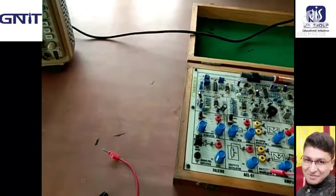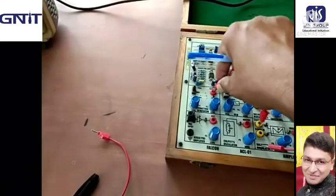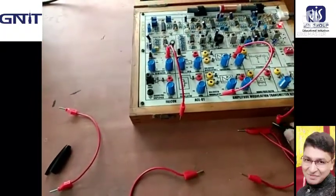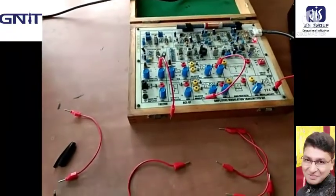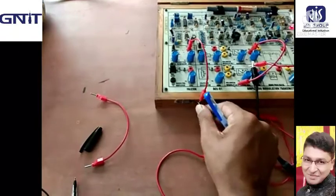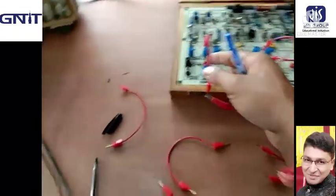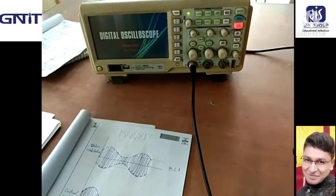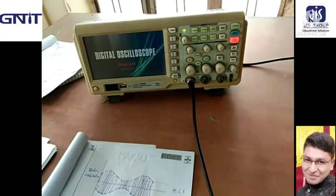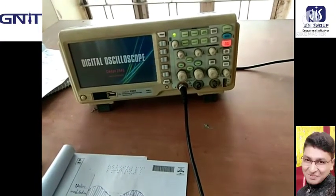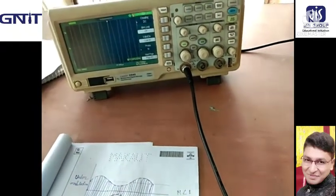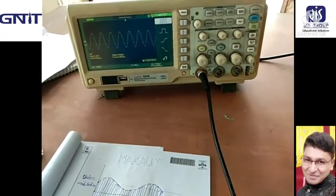Now, measure the message signal. The black probe is connected to ground and the red probe is connected to the message signal. Now see the signal. This is our message signal.